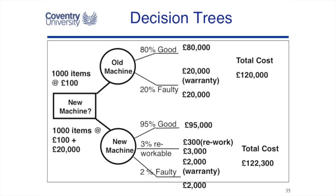There's a cost for reworking and a cost for warranty. With the old machine, the decision tree gives a total cost of £120,000. With a new machine, the total cost is slightly more at £122,000 — so based on costs alone, we'd go with the old machine. However, there are bigger issues: do we want 20% of customers unhappy? Does the machine need calibration or maintenance? Can it be used on other projects? Who will operate it? These are the wider issues to consider. But if you do have costs and percentages, you can use a decision tree.